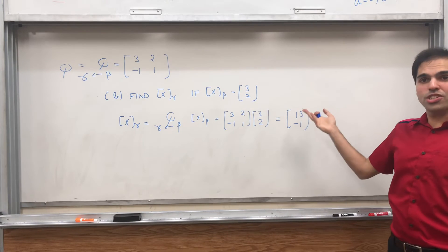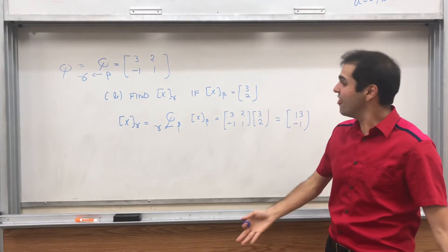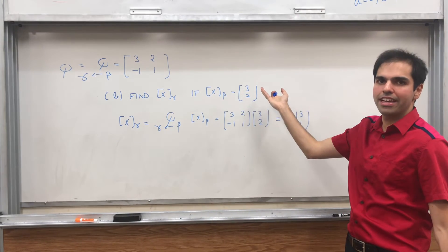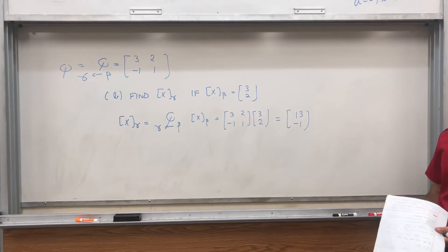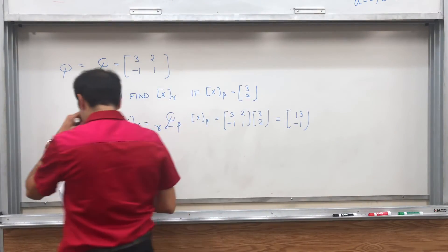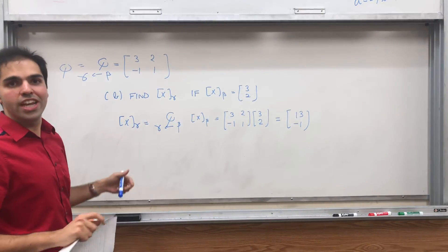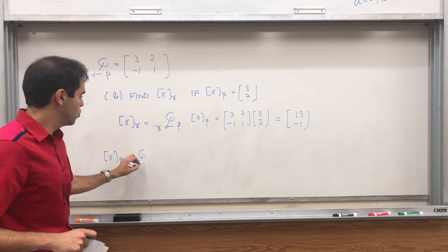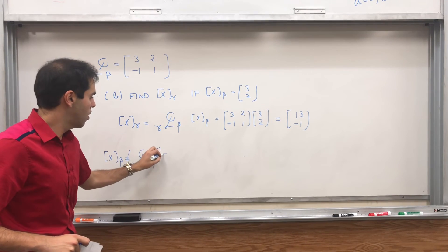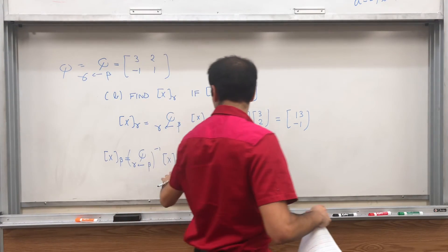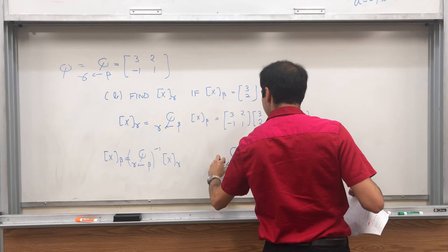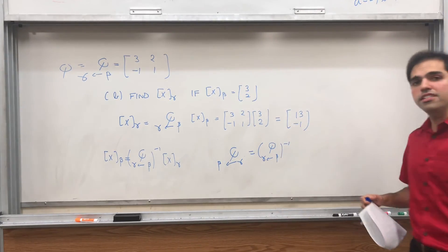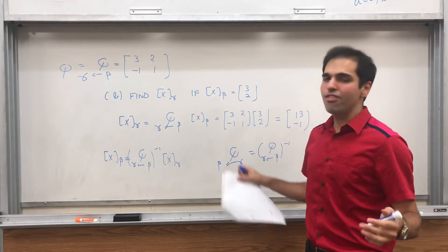And look — at no point did we ever figure out what x is. This is what's wonderful. Sure, in theory you could calculate x as 3 times the first vector plus 2 times the second vector and then find the coordinates, but this is much easier: you just apply this matrix. And also, from there you can also change coordinates back. If x_gamma = Q · x_beta, then x_beta = Q_inverse · x_gamma. So to change coordinates from gamma back to beta, you just use Q from beta to gamma inverse.